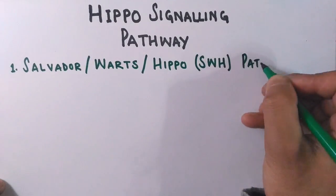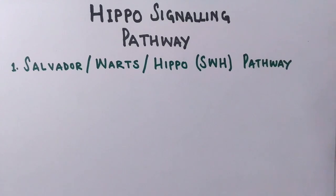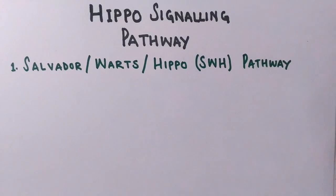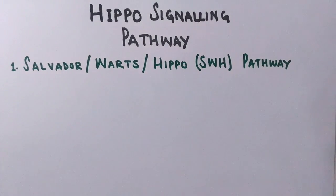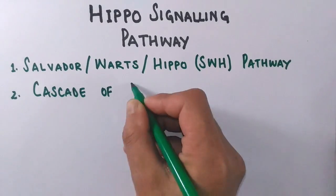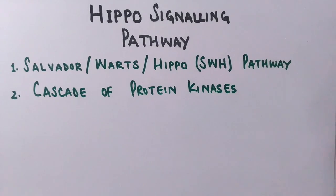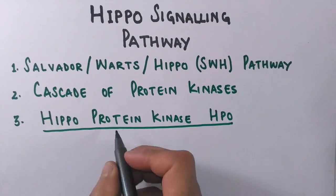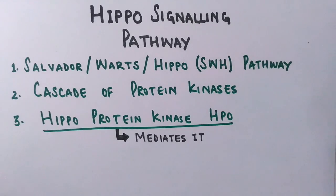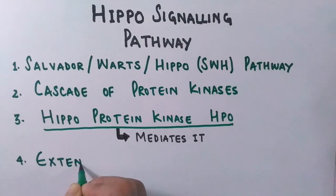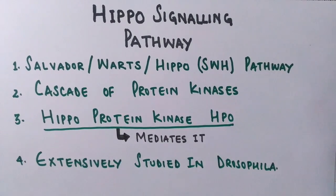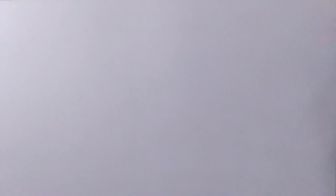The Hippo signaling pathway is also called Salvador-Warts-Hippo or simply SWH pathway because these all are protein kinases involved in the pathway. It's a cascade of protein kinases where one protein kinase is phosphorylated by another. This Hippo signaling pathway has been extensively studied in Drosophila, but its orthologs have been discovered in mammals too.